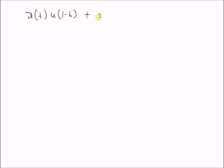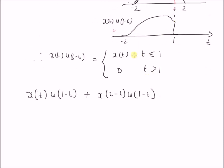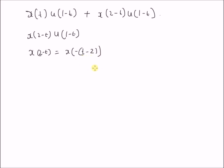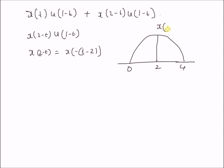Now let us find the sum of x of t multiplied by u of 1 minus t, with x of 2 minus t multiplied by u of 1 minus t. We already know the first product. For the second, x of 2 minus t equals x of minus (t minus 2), which is a right shift by 2 of x of minus t. Since x of t equals x of minus t, the starting point becomes 0, the end point becomes 4, and the peak is at 2. This is x of 2 minus t.